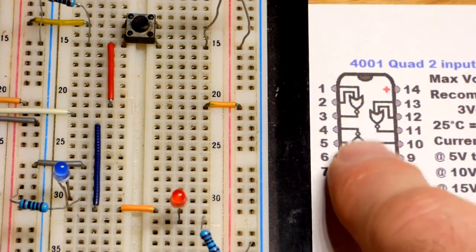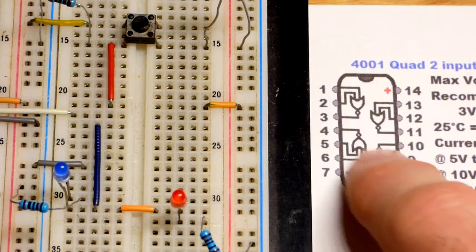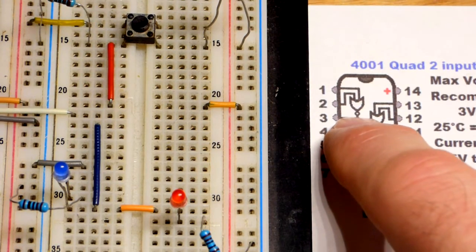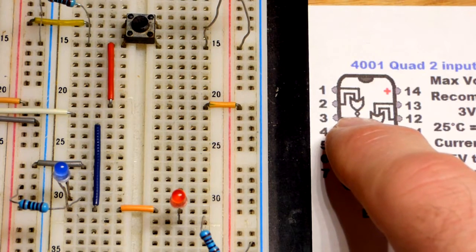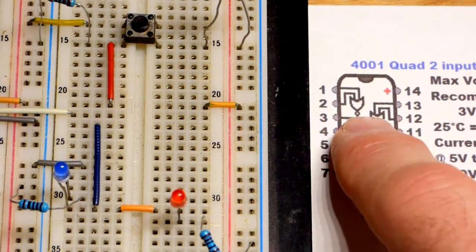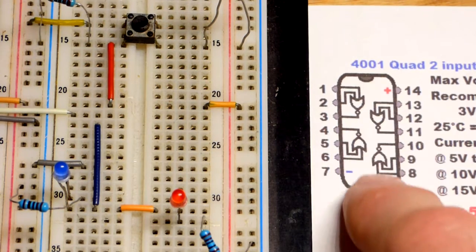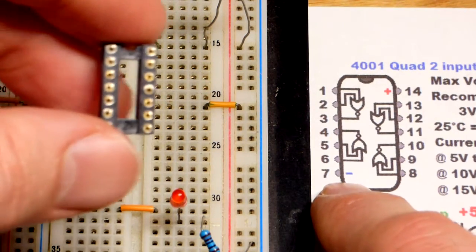I made a diagram for this video. We're going to look at the pin layout. There are four NOR logic gates. That's the OR schematic symbol with a dot that means it's inverted or NOT - so it's NOR.